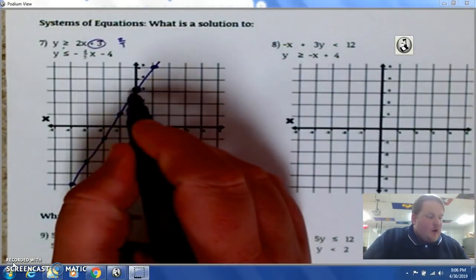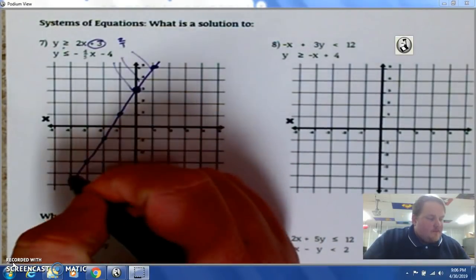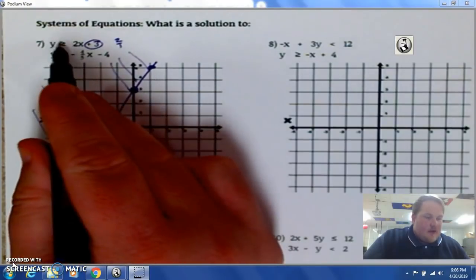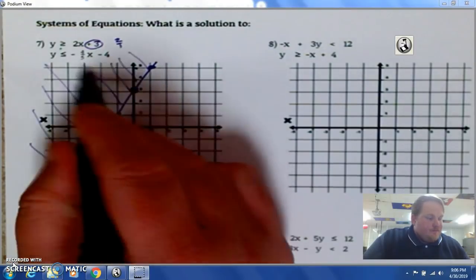And, it says y is greater than 2x plus 3. So, I start at that 3. And, y is greater. So, I shade up. We know it's greater because it's eating the y. It's a little alligator mouth.